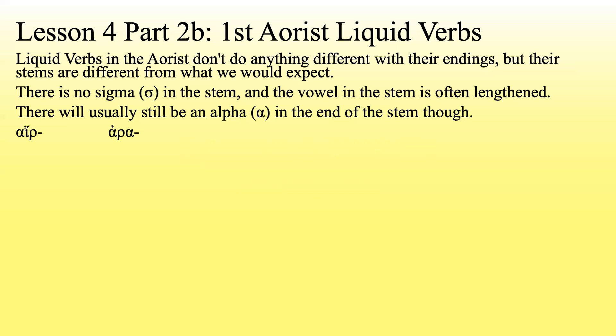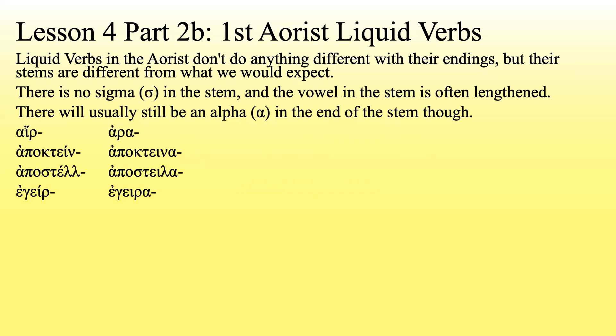So 'ire' becomes 'ara' — the iota drops out, no sigma, still have an alpha. 'Apocatane' becomes 'apocatena' — nothing too unusual there, just no sigma. 'Apastel' becomes 'apastela' — the lambda drops out and we add an iota, and again, no sigma.